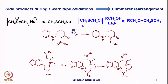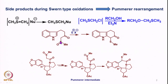In Swern oxidation, we get an alpha-chlorosulfide which is a Pummerer-type intermediate. Either this directly reacts with alcohol to form a byproduct, or the alcohol can react directly with the sulfonium ion species before the chloro species is formed. We also saw that if we take an indole-based molecule and react with an electrophile through the Pummerer intermediate, carbon-carbon bond formation takes place to form a particular final product.